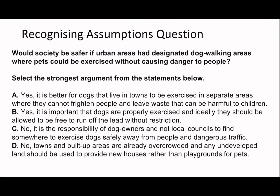Third question: would society be safer if urban areas had designated dog walking areas where pets could be exercised without causing danger to people? The key idea here is 'causing danger to people.' Option A says it's better for dogs in towns to be exercised in separate areas where they cannot fight people and leave waste that could be harmful to children — it mentions danger, so it could be the answer. Option B says dogs should be free to run off without restriction — the emphasis there is too much on the dogs getting exercise rather than on causing danger.